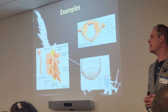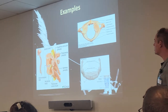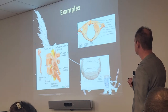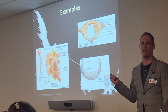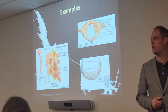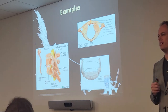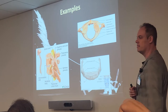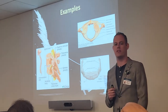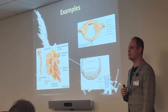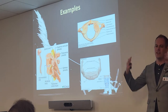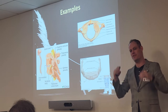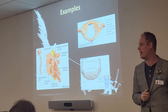Here's another cervical vertebra — a little different from the one we just looked at. This is your C1, also called the atlas. Does anyone know why it's called the atlas? In Greek mythology, Atlas carried the weight of the world on his shoulders. The atlas holds your head on top of it — otherwise your head would just flop off your body. That's why it's called the atlas.